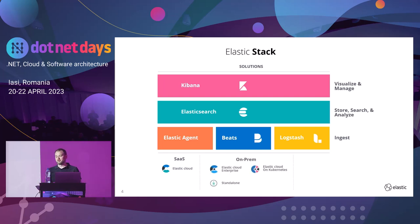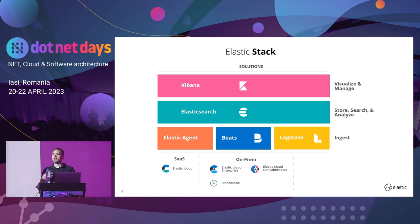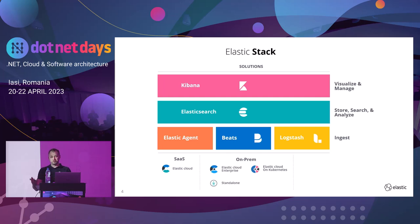There are cases where you might want to work on-prem — typically organisations transitioning with legacy Elasticsearch clusters, or environments where you can't put data in a public cloud. One option is running Elasticsearch standalone, where you have full responsibility for installing and configuring it, managing backups and security. If you want a middle ground, we have Elastic Cloud Enterprise, which is the Elastic Cloud technology set installed and run within your own network environment. We also have a similar offering for Kubernetes.